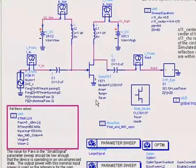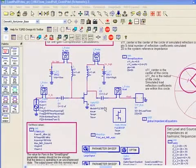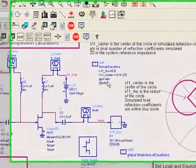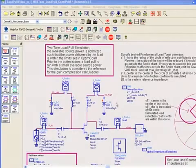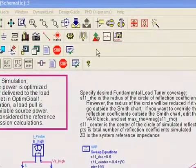To get a little better resolution in our load-pull contours I've increased the number of load points that we will simulate from 64 to 144. Because this load-pull involves an optimization, we have to start it by clicking on the optimization icon.